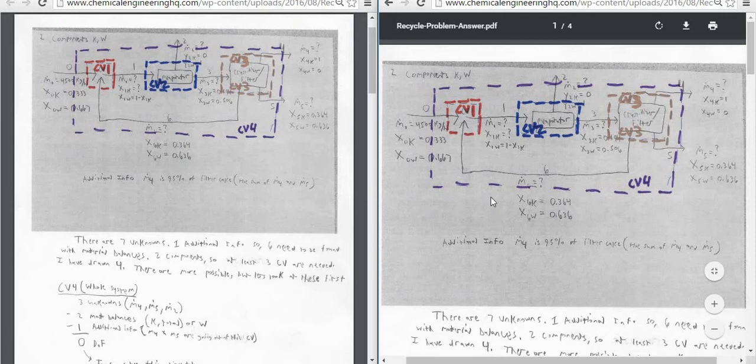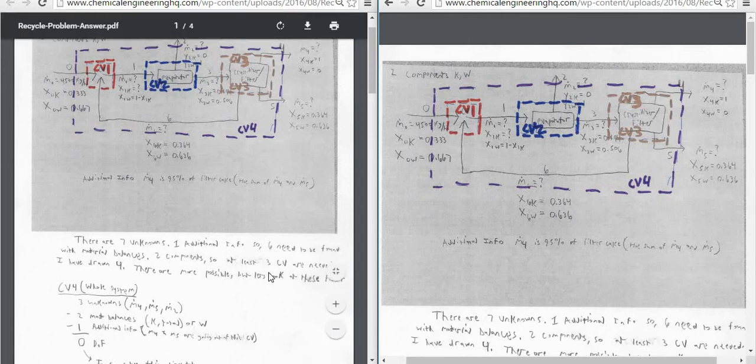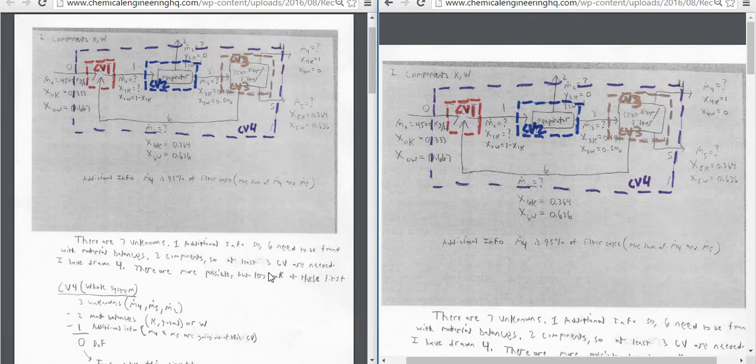I'm going to leave this side up so you can see the problem we're working on and the different control volumes that we draw. So we know there's seven unknowns and there's one additional information. So that means we're going to have six that we're going to need to find with material balances.